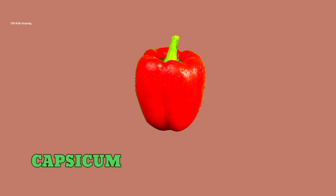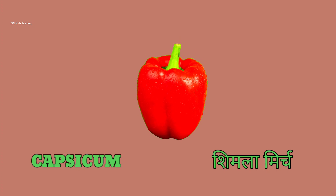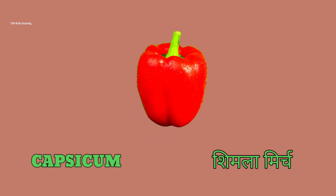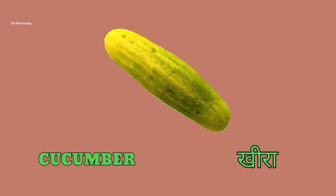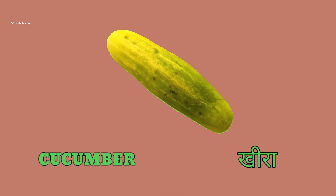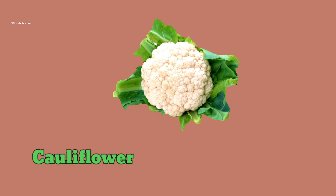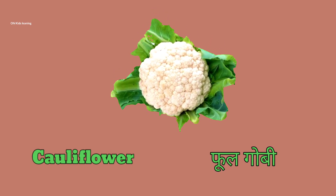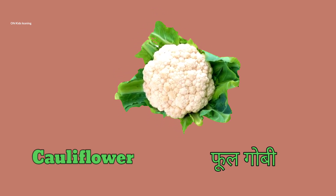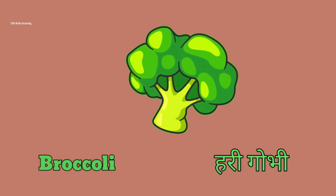Capsicum — capsicum means simla mirch. Cucumber — cucumber means khira. Cauliflower — cauliflower means full gobi. Broccoli — broccoli means hari gobi.